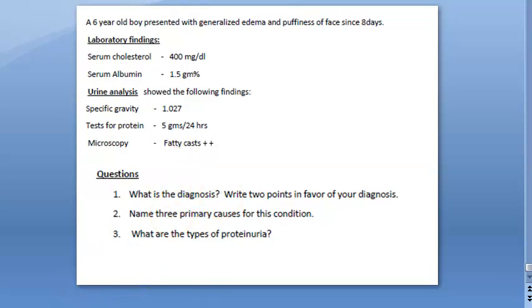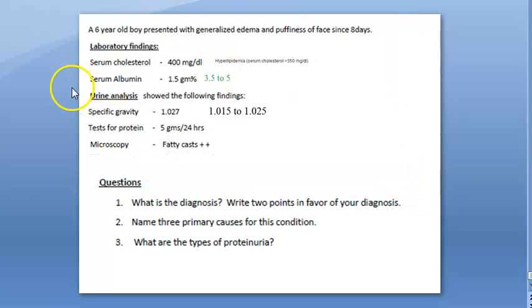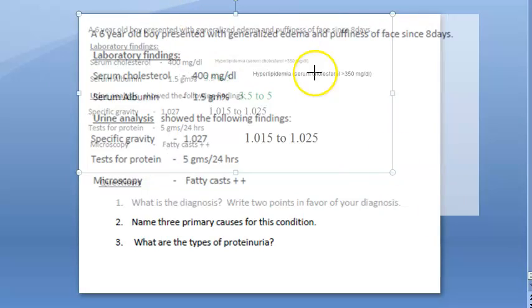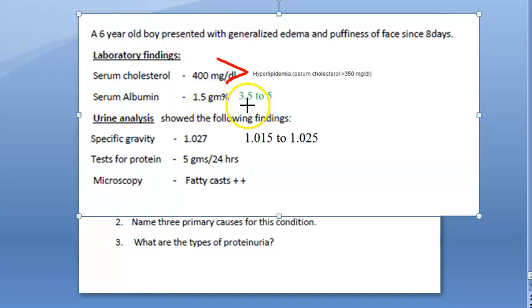What are the normal values? For cholesterol in a 6 year old boy, if it is about 250-350, it will become hyperlipidemia. So this kid has excess serum cholesterol. Serum albumin should be 3.5 to 5 gram percentage — this is less. So the amount of albumin in the blood is low.